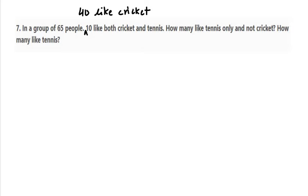In the first value, 65 people are there in a group, so N(C∪T) equals 65. It says that 40 people like cricket, so N(C) is 40.